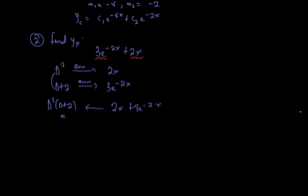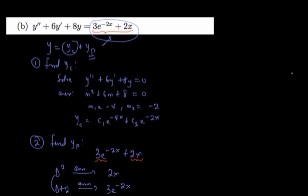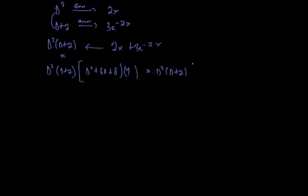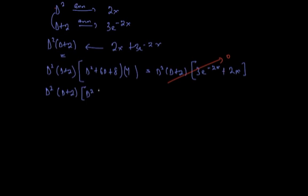Since I've found the annihilator, I apply it to both sides of the differential equation. Applying D²(D+2) to both sides gives D²(D+2)(D² + 6D + 8)y on the left, and D²(D+2) operating on 3e^(-2x) + 2x on the right. Since D²(D+2) is the annihilator of the right-hand side, that goes to zero, leaving D²(D+2)(D² + 6D + 8)y = 0.